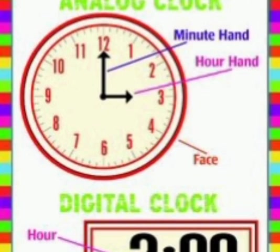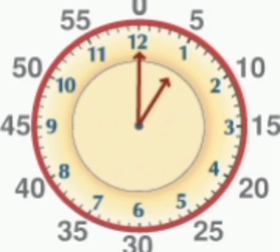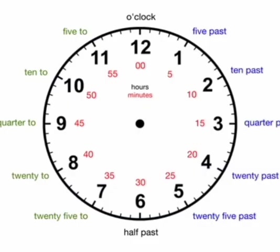The short hand shows the hour. The long hand shows the number of minutes. On the clock, 1 is 5 minutes, 4 is 20 minutes, and 8 is 40 minutes.